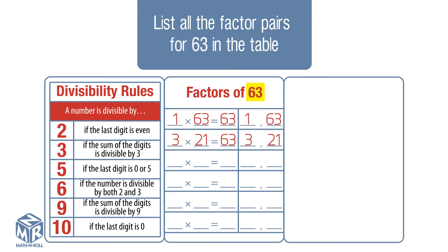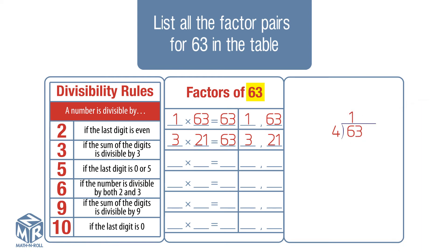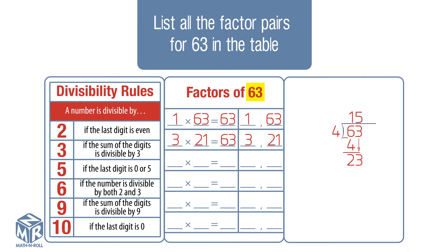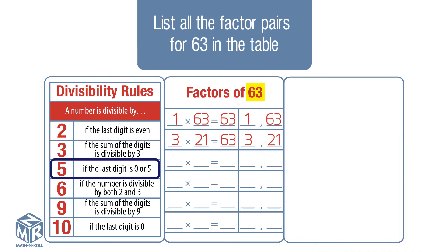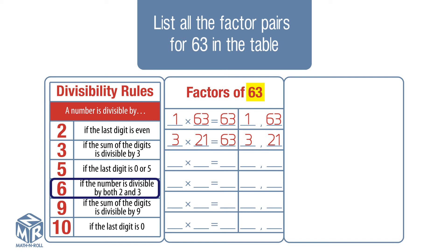4 is not on the divisibility rules table, so we have to use long division. Divide 63 by 4: we get 15 with a remainder of 3, so 4 is not a factor of 63. Let's check 5: the last digit is 3, so 5 is not a factor of 63. Let's try 6: 63 is not divisible by 2, so it is not divisible by 6.